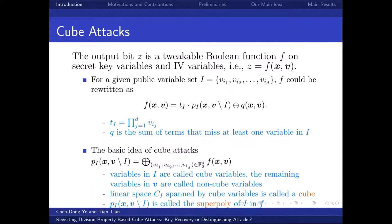The basic idea of cube attacks is that p_I equals the summation of all 2^d polynomials derived from f by setting cube variables to all 2^d possible values. In cube attacks, variables in I are called cube variables, and the remaining variables are called non-cube variables. The linear space C_I spanned by cube variables is called a cube, and the polynomial p_I is called the superpoly of I in f.